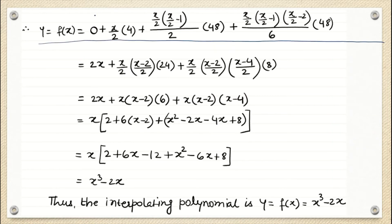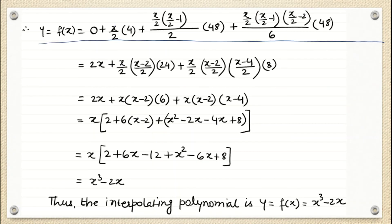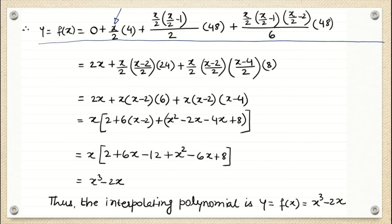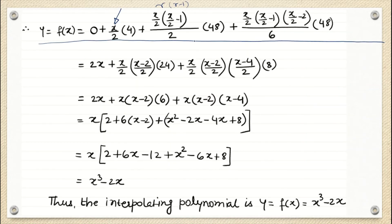Substituting into Newton's forward formula: y_0 = 0, so that term vanishes. Then R × Δy_0: with R = x/2 and Δy_0 = 4, this gives 2x. The next term is R(R−1)/2! × Δ²y_0: numerator is (x/2)(x/2 − 1) = (x/2)(x−2)/2, divided by 2, multiplied by Δ²y_0 = 48. The third term is R(R−1)(R−2)/3! × Δ³y_0, with Δ³y_0 = 48 and 3! = 6.